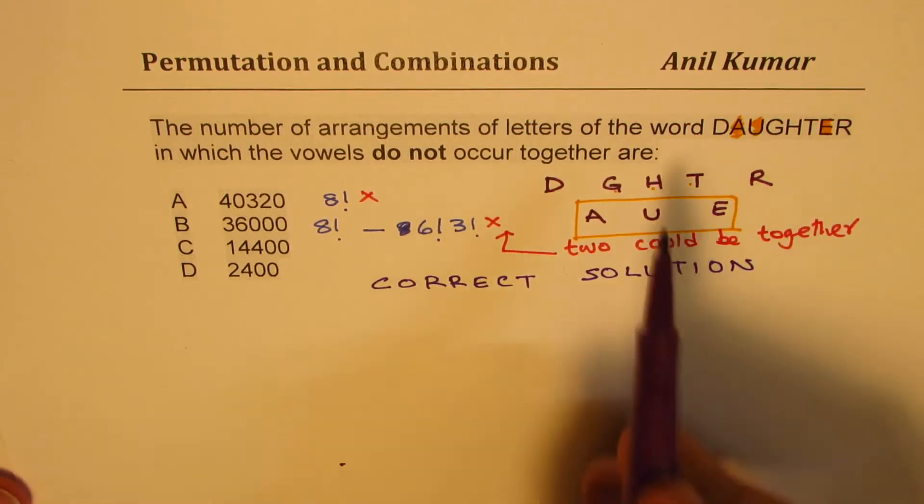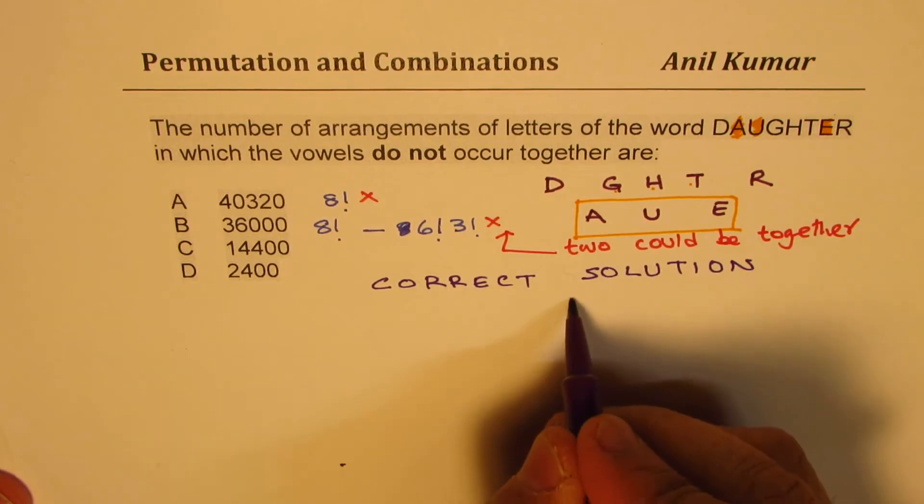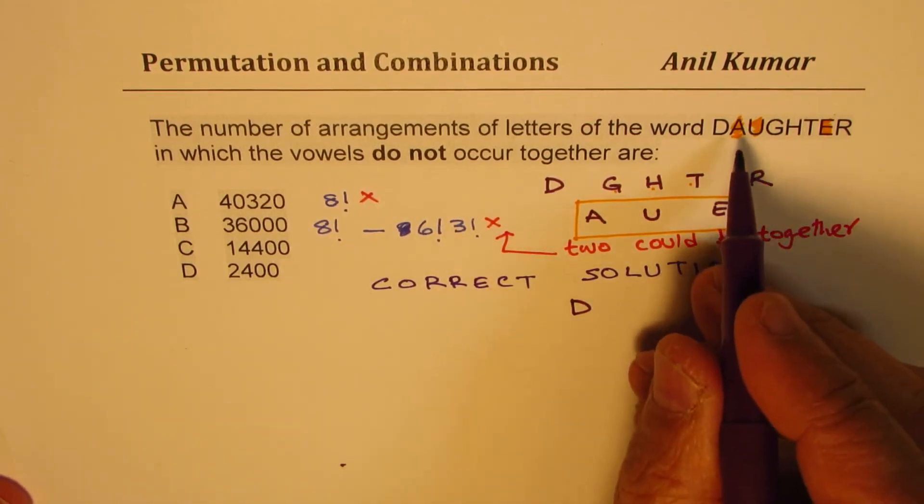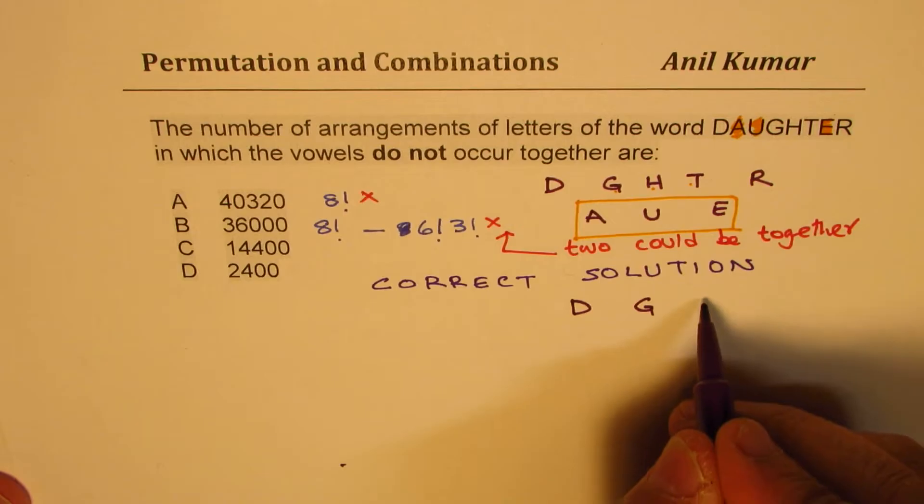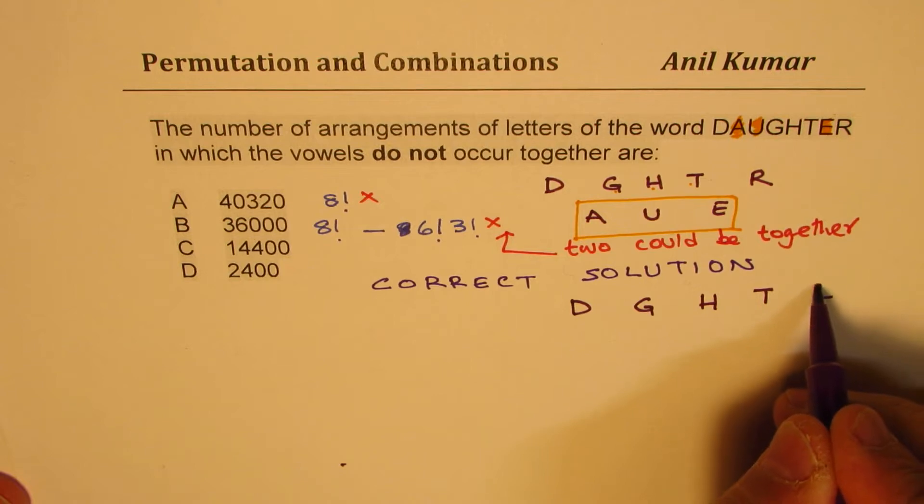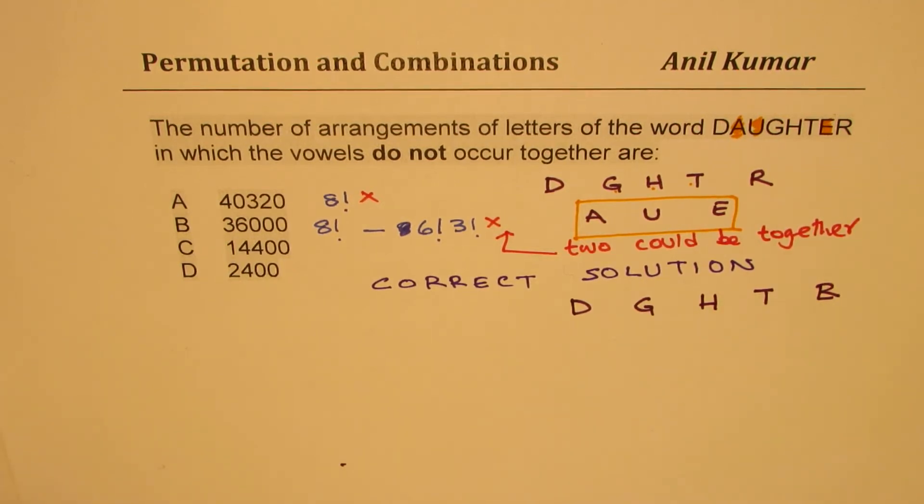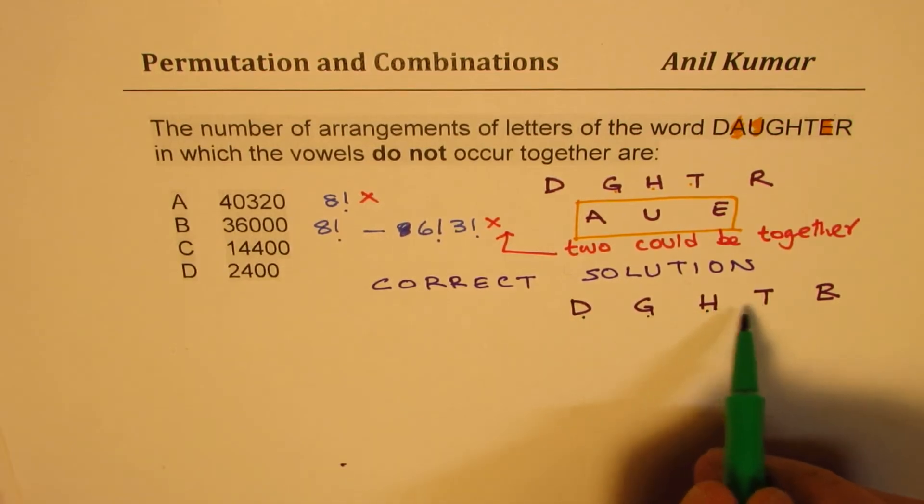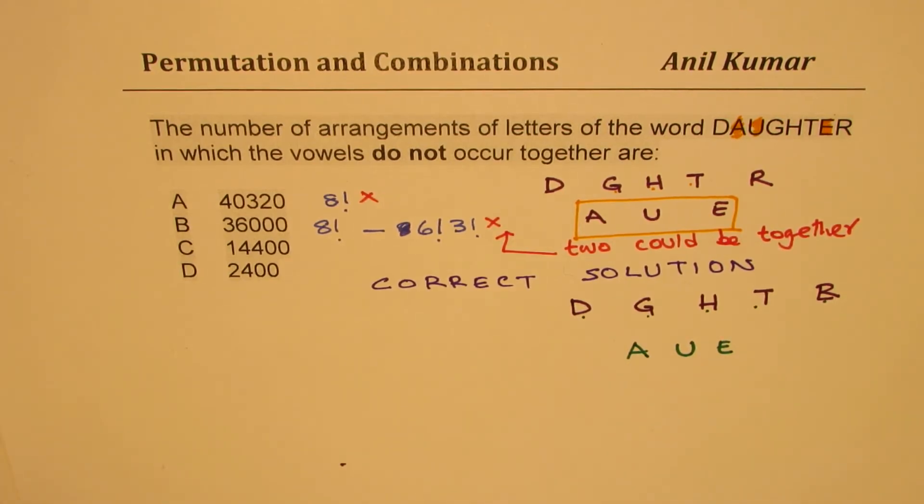So now let's talk about the correct solution. What we have here is the word DAUGHTER, which has D, G, H, T, and R as consonants. What we will do is arrange the letters which are not vowels—1, 2, 3, 4, and 5. Three of them which are vowels—A, U, and E—we can insert in between, ensuring that they're always separate. You get my idea. So that is how we actually find the solution.